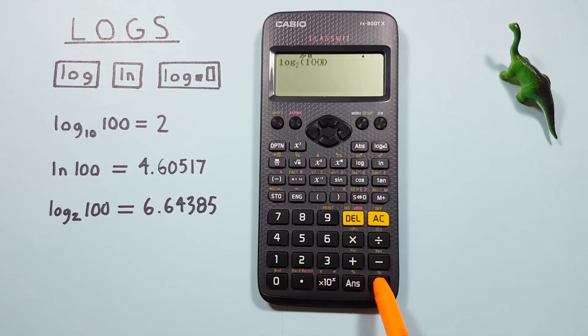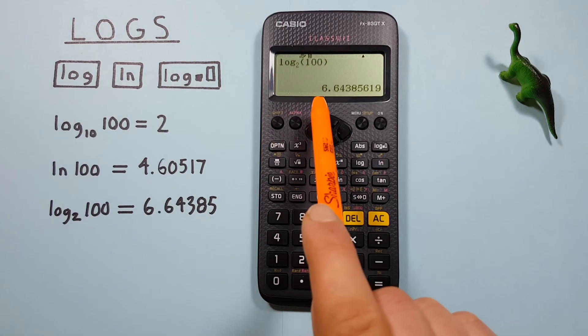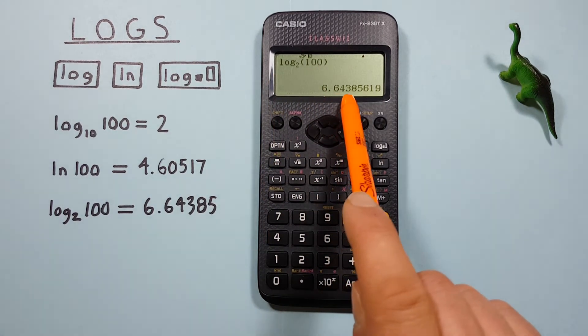And then we can press equals, and see we get a result of log base 2 of 100 is equal to 6.64385, etc.